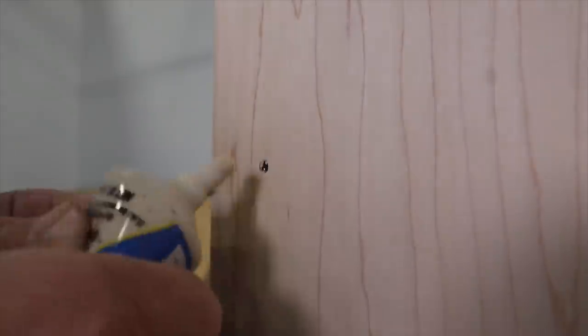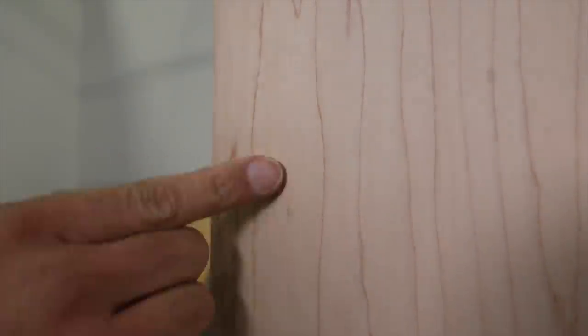The heads of finish screws are quite small, but if you want to go the extra mile, you can cover them up with some wood putty. Once the putty dries, just do a light sanding to get it nice and flush with the surface of the plywood.